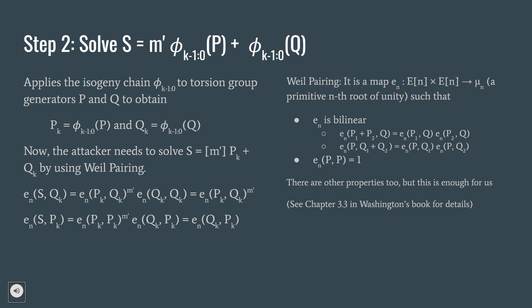What's a Weil pairing? It's a map from En times En to mu n. mu n is a primitive nth root of unity, such that this map en is a bilinear map, and en of P, P, if we take the same points P and P, it gives us 1. There are, of course, other properties of these Weil pairings, but these two properties are enough for us.